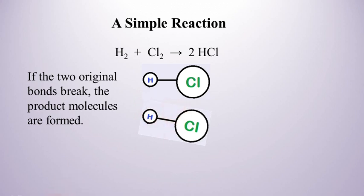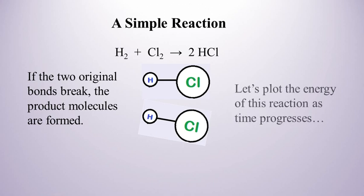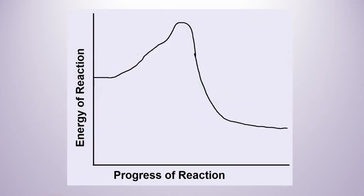And so this is just the basic idea of how chemical reactions take place. There has to be a collision there. Now let's think about this in terms of energy. If we plot the energy of this reaction as time progresses, well, maybe we could start right here.